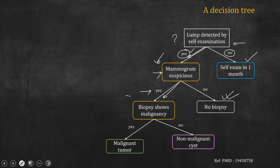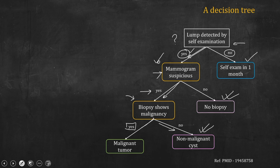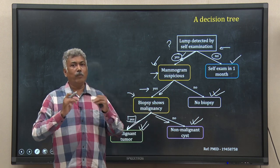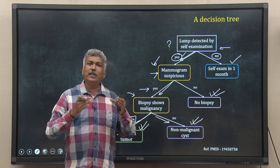The clinician now asks: does the biopsy show malignancy? If it does not show malignancy, the clinician follows that arm and decides the lump is nothing but a non-malignant cyst. Whereas if the biopsy report shows malignancy, the clinician follows that path and decides the lump detected in the breast is a malignant tumor. So this is a decision tree.